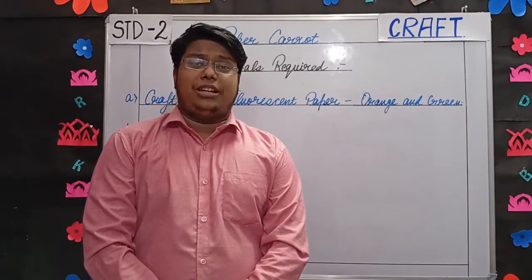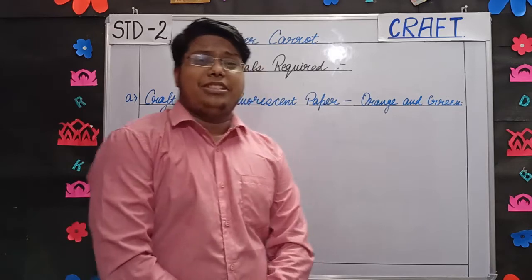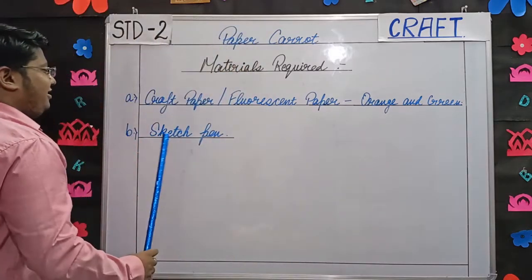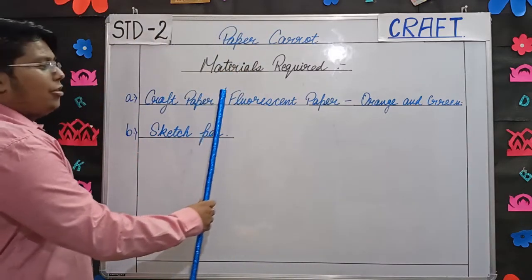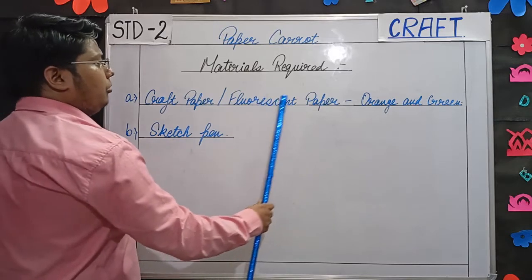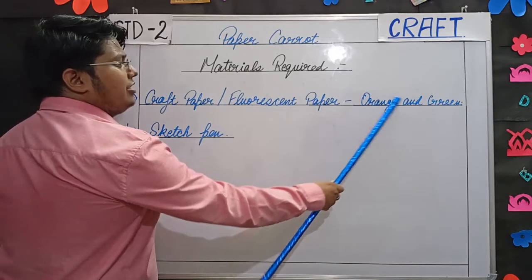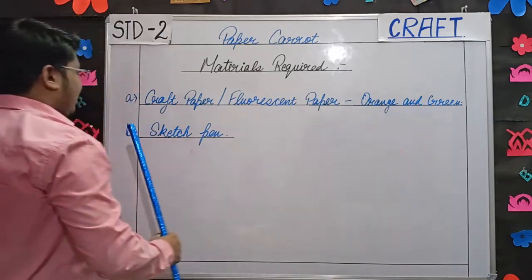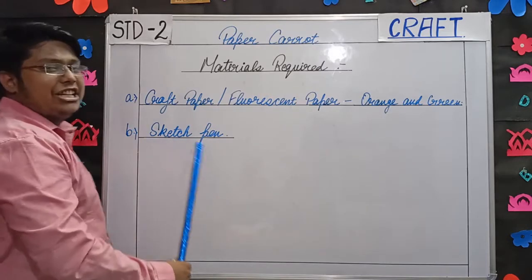In order to make paper carrot, the materials we require are craft paper or you can also use fluorescent paper, orange and green, and second one is sketch pen. Now, let's see how to make it.